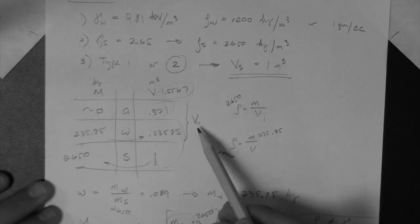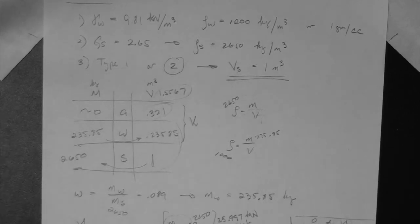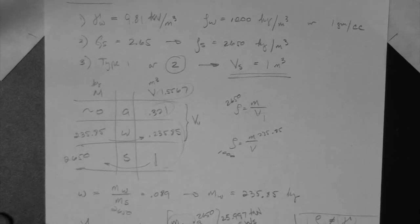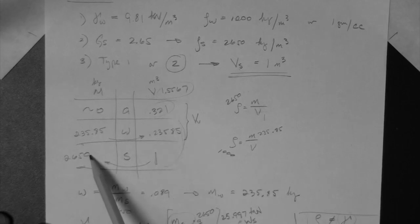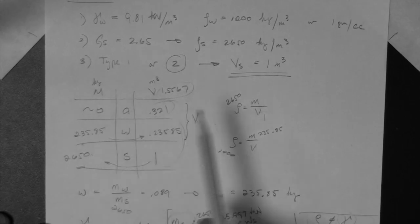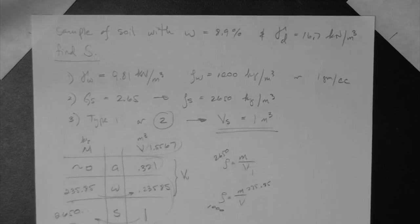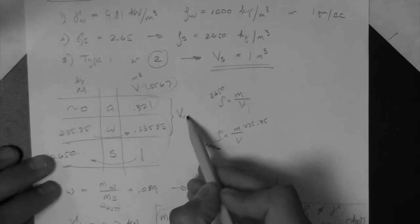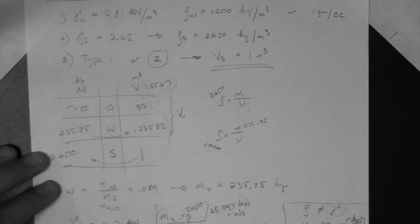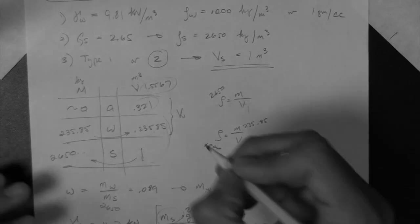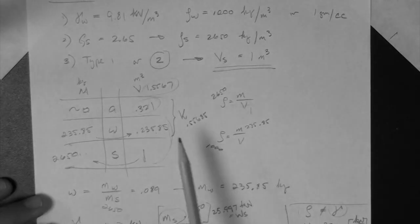That is the volume in meter cubed of air, which means that we can find the volume of voids. Actually, at this point, the phase diagram is basically filled. The last item that we could find would be the mass, total mass, which would be the summation of these two. Or these three, but this is zero, so this plus this plus this is this. We could do that, but we don't need it for this problem, because we need to find the S, and that's it. So the volume of voids is that plus this, right, the volume of air and the volume of water. So 0.321 plus 0.23585, 0.55685 meters cubed.